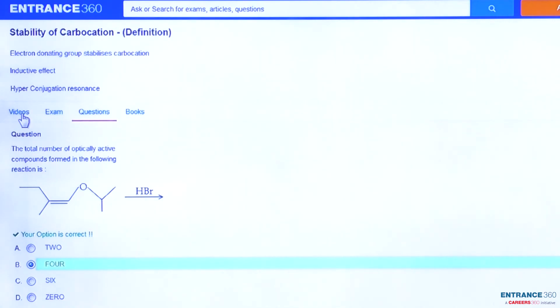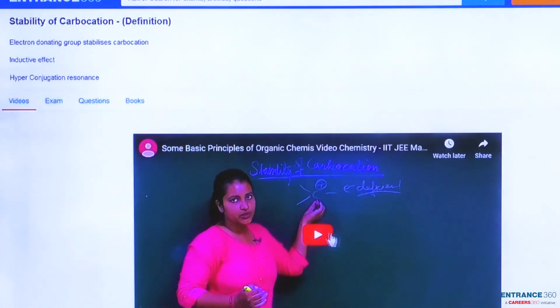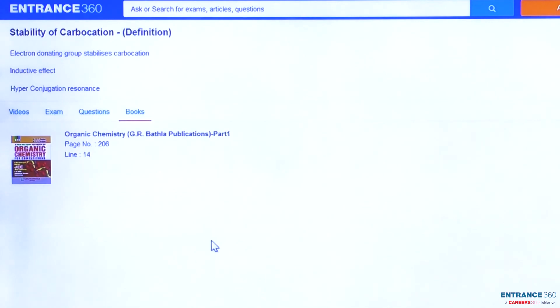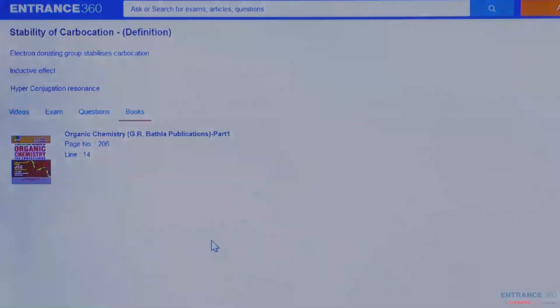To know more about this concept, you can watch the video which is around 1 minute, and you can also go through the books: NCERT Organic and another book, Organic Chemistry GR Publication Part 1. This concept is on page number 206, line number 11. I hope this video was very helpful to you. Thank you very much, students.